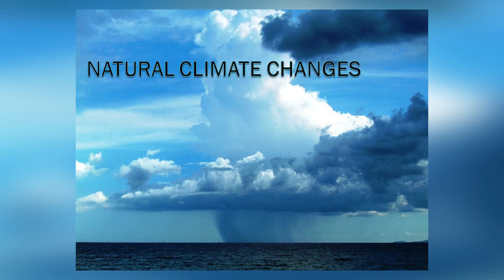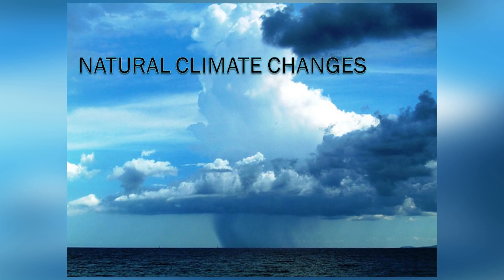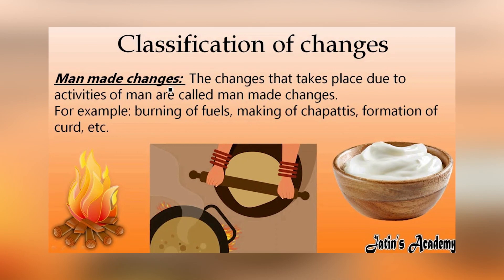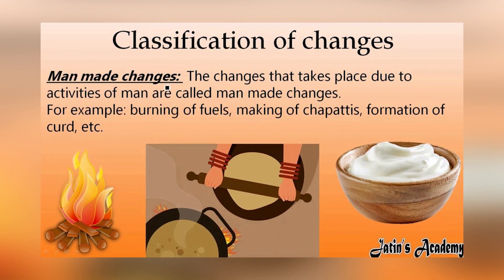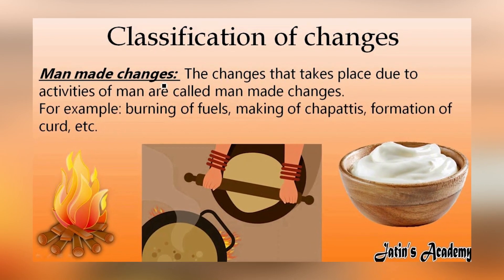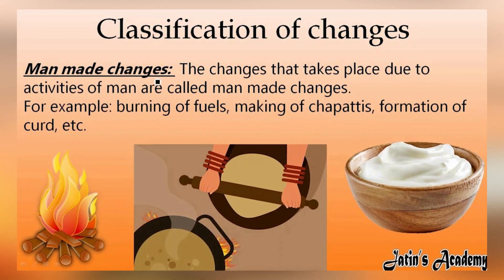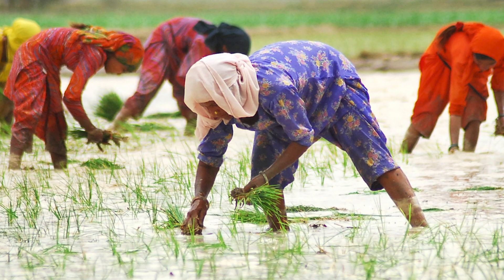The changes which take place in nature on their own and are beyond the control of human beings are known as natural changes. For example, rotation of the earth. Human-made changes — the changes which are brought about by human beings are known as human-made changes. For example, cooking and cultivating crops.